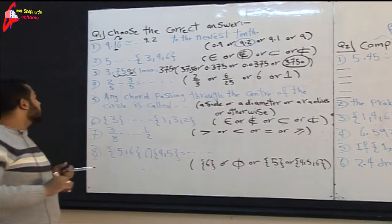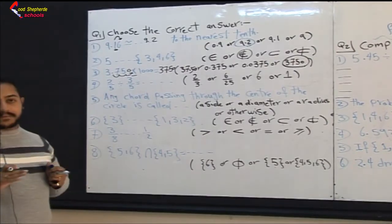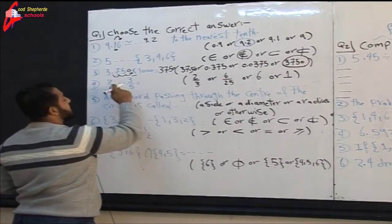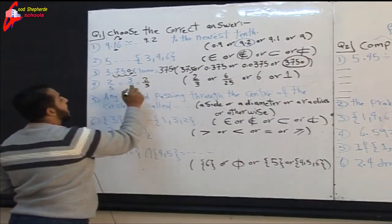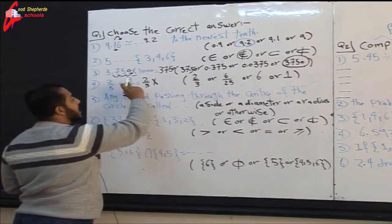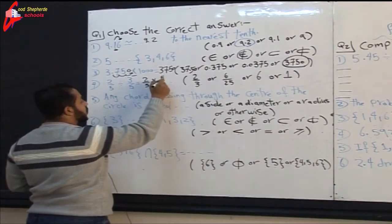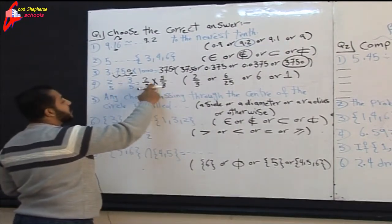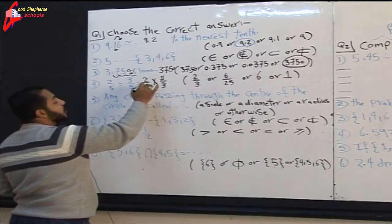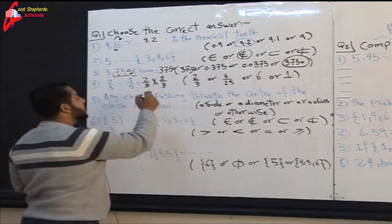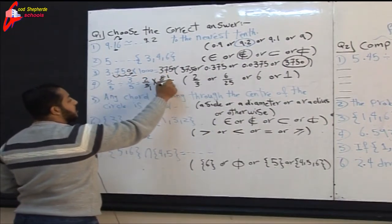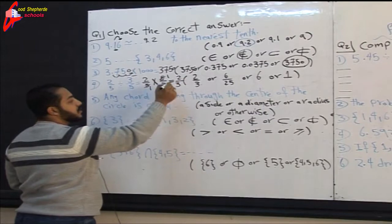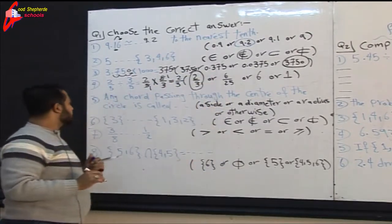Question four: 2/5 divided by 3/5. When dividing a fraction by another fraction, keep the first fraction as 2/5, change the sign to multiply, and flip the second fraction to 5/3. Before multiplying, simplify: 5 over 5 becomes 1. Numerator times numerator: 2 times 1 equals 2. Denominator: 1 times 3 equals 3. Our answer is 2/3.